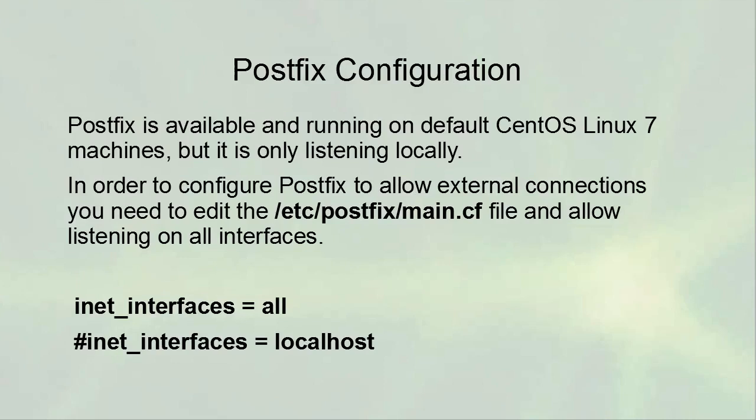Postfix is available and running by default on CentOS/RHEL 7 machines, but it's only listening locally — receiving localhost-type email messages. Some services use mail to communicate with the administrator. For example, whenever a cron job produces output, it sends an email to the root user indicating what the command output was. Normally you write cron jobs that produce no output unless there's an error, which then gets emailed to the administrator.